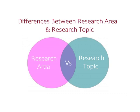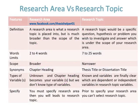This video covers the differences between research area and research topic with cross comparisons and examples. A research area is what a research topic is placed into, but is much broader than the scope of the topic. A research topic, on the other hand, is a specific question, hypothesis, or problem you wish to investigate and answer, which falls under the scope of your research area.